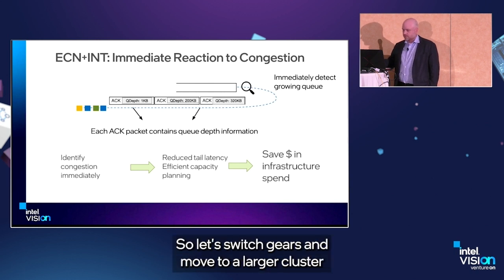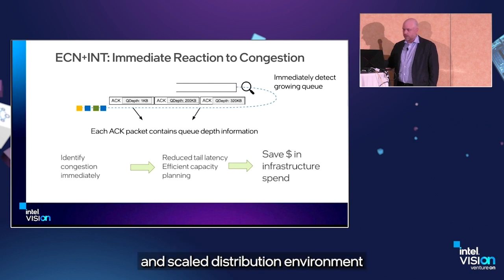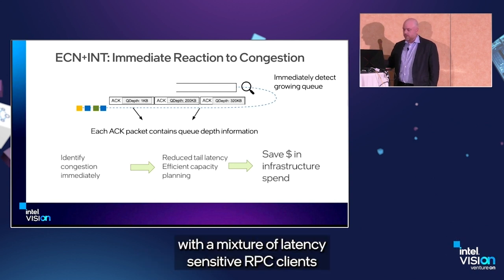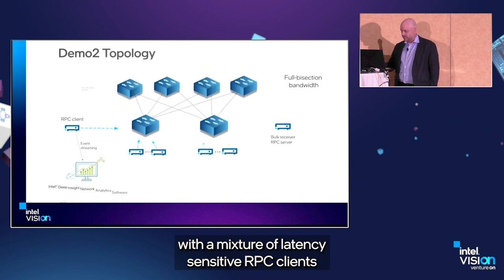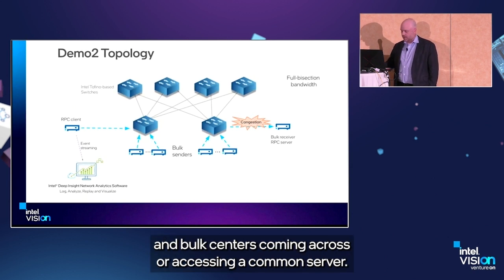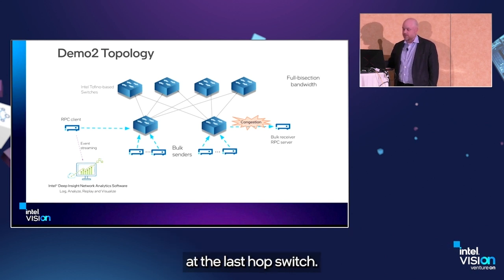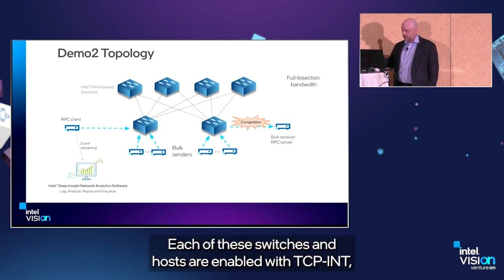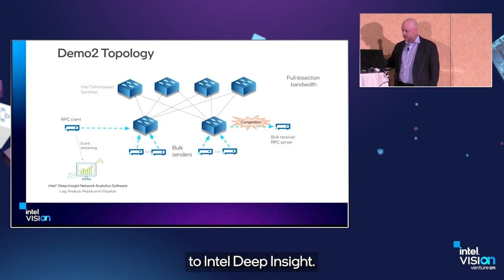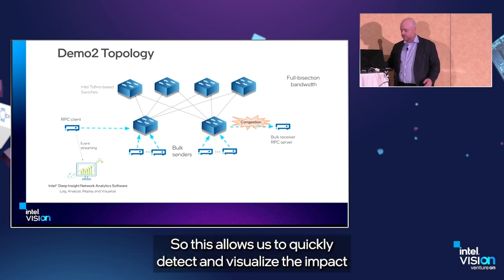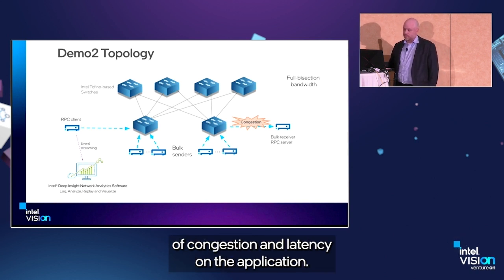Let's switch to a larger cluster and scaled distribution environment with a mixture of latency-sensitive RPC clients and bulk senders accessing a common server. This typical scenario often results in congestion at the last-hop switch. Each of these switches and hosts are enabled with TCP INT, and the host sends telemetry data back to Intel Deep Insight, allowing us to quickly detect and visualize the impact of congestion and latency on the application.